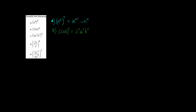So 2 cubed: 2 squared is 4, and 4 times 2 is 8, so 2 cubed is 8. That gives us 8a cubed b cubed.